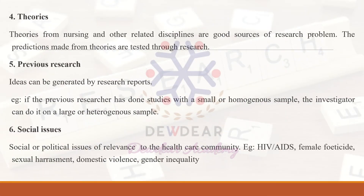The fourth source is theories — nursing and related discipline theories are good sources of research problems, as predictions made from theories are tested through research. The fifth source is previous research: if a previous researcher studied a small or homogeneous sample, a new investigator can replicate it with a larger or heterogeneous sample.